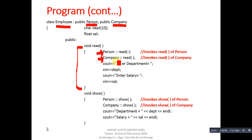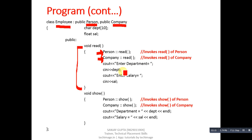After calling the read functions of Person and Company, it then reads department and salary. So whenever the Employee class read function is called through main, it first calls the read function of Person class, then after its execution calls the read function of Company class, and then department and salary of Employee class are read. Similarly, the show function is defined.